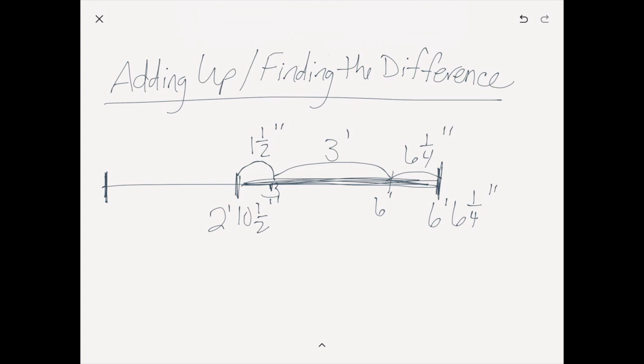Adding is way easier than subtracting. To actually find the answer, kids need to add up what's here. If they have built some number sense, this addition piece is super quick and easy — they understand quickly that a half is the same as two-fourths. So they put their fractions together, get three-fourths, their inches are seven, and the answer is three feet, seven and three-fourths inches. Even though it looks like a lot of steps, kids naturally do these very quickly, and if they have number sense built, they can combine these amounts very efficiently.